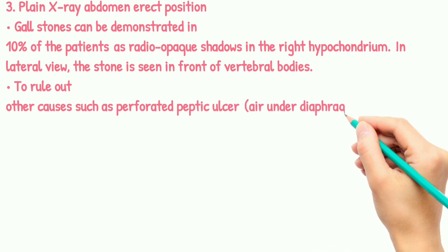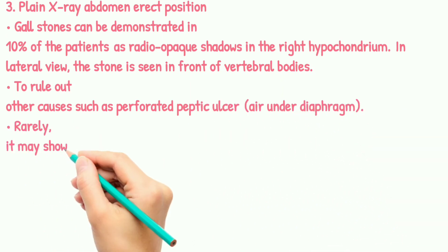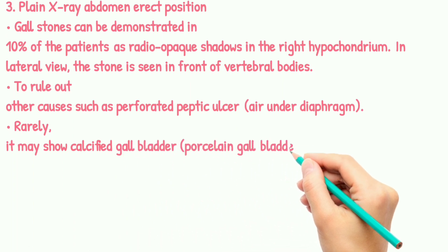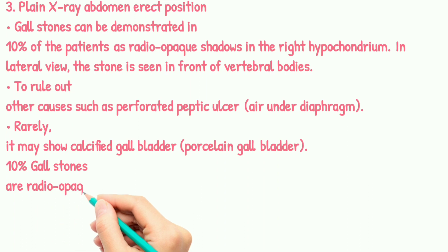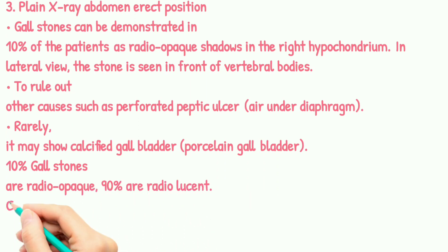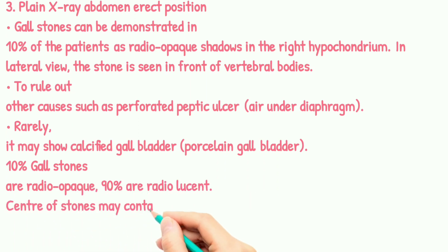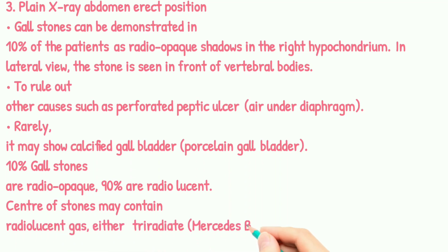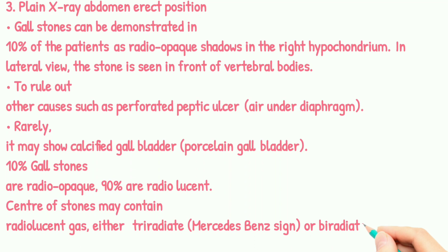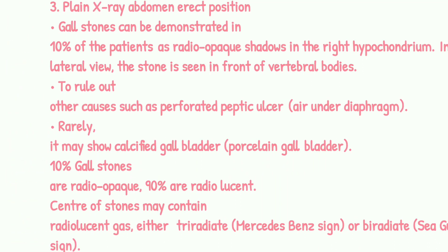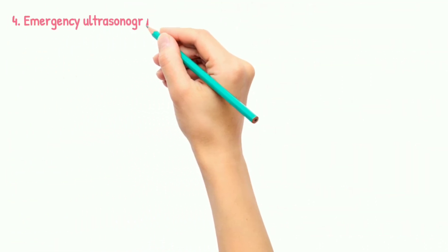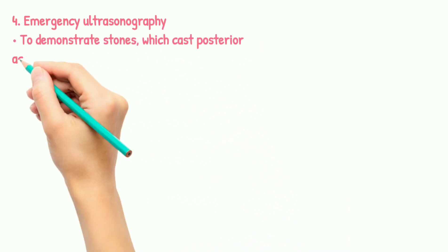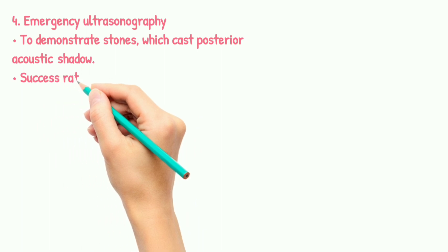Rarely, the X-ray may show a calcified gallbladder, also known as the porcelain gallbladder. 10% of gallstones are radio-opaque and 90% are radiolucent. The center of stones may contain radiolucent gas — either tri-radiate (the Mercedes-Benz sign) or the bi-radiate seagull sign.